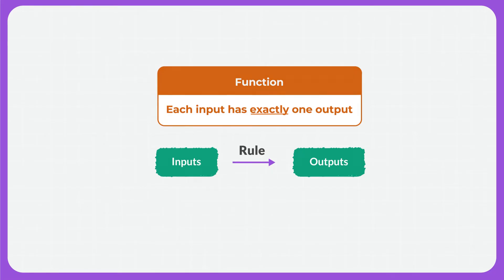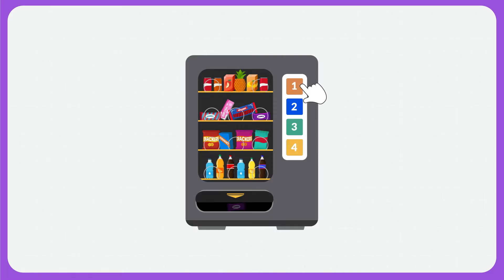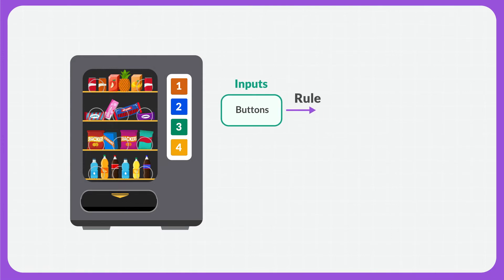We can think about functions like a vending machine. When I press a button on a vending machine, something comes out. On this machine, there are four buttons. The buttons I decide to press represent the inputs — I'm putting information into the vending machine, the choice I'm making. The machine takes that information and applies the rule by telling the mechanics what to do. Then it delivers the outputs, the items that come out.